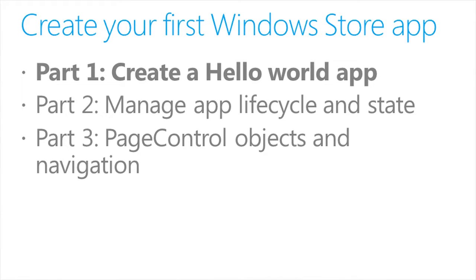We'll show how to create a new project. We'll build some basic HTML for our Hello World page and show how to handle a button click event. Next, we'll show how to switch between the built-in light and dark themes and how to create your own custom CSS styles. And finally, we'll show how to use the Windows Library for JavaScript rating control.